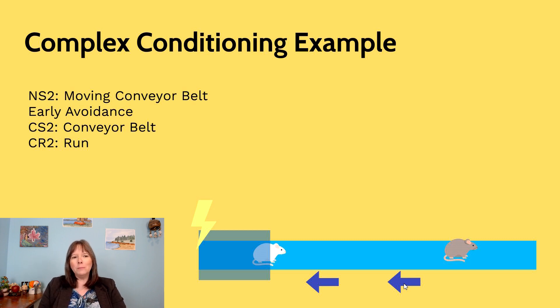Because of early avoidance and rats are very smart, very trainable, they now change and match that conveyor belt with the dark compartment. The dark compartment's matched with the electric shock. So through that early avoidance, they're now going to want to run when the conveyor belt turns on.